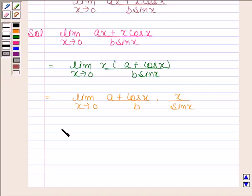This is equal to limit x tends to 0 a plus cos x by b into 1 by sin x by x.